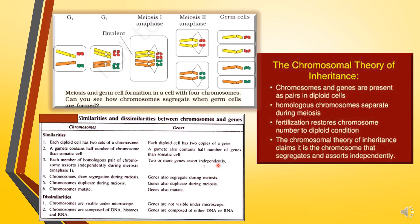Two or more genes assort independently. This was proved by Mendel through the dihybrid cross, where he considered seed shape and seed color and found two new recombinant varieties arising. From this Mendel gave us the law of independent assortment. Chromosomes show segregation during meiosis, and genes also segregate during meiosis. Chromosomes duplicate during meiosis, and genes also duplicate — because genes are present on chromosomes, so when chromosomes duplicate, genes duplicate too.